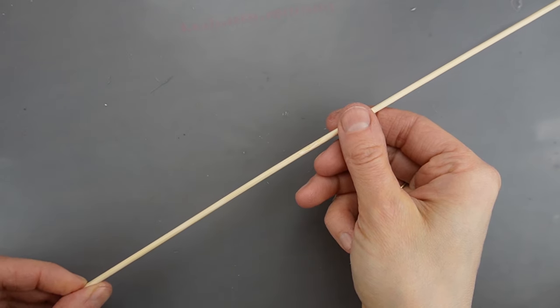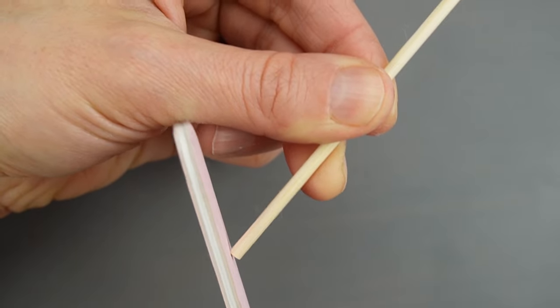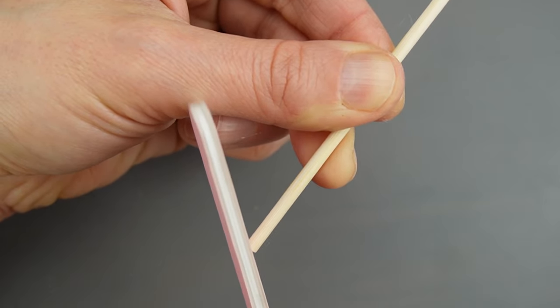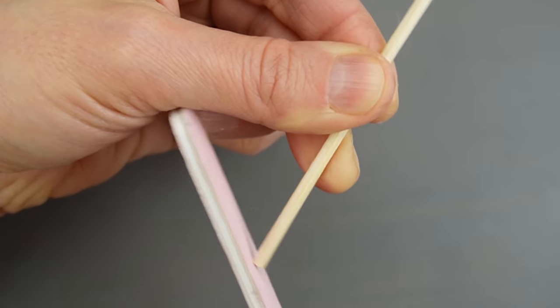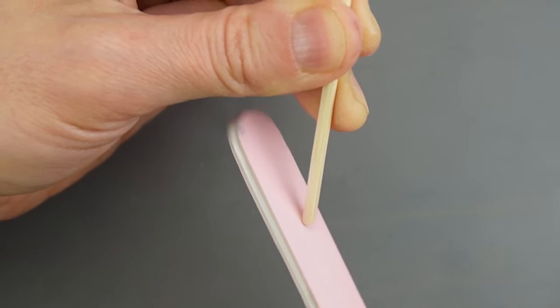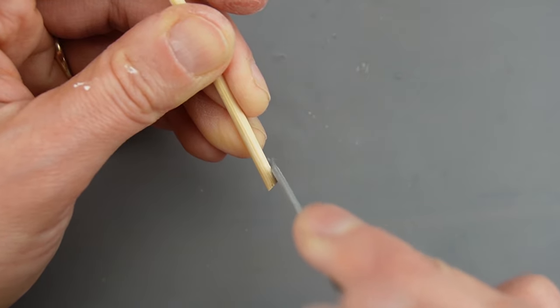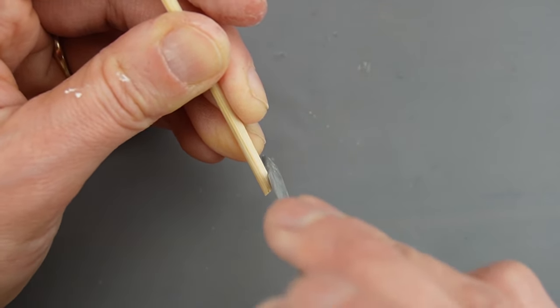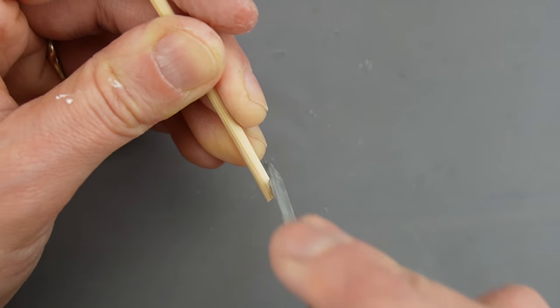To make the spout I'm using a bamboo skewer. I'm using my emery board to make an angle at the end where I can glue it to the side of the kettle. I'm just making a slight angle so the stick isn't sticking straight out.